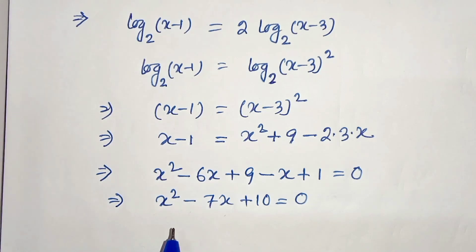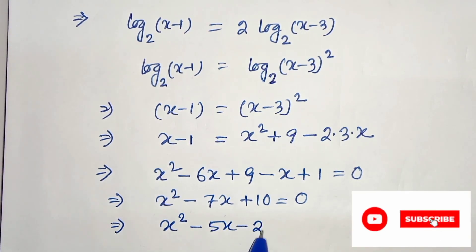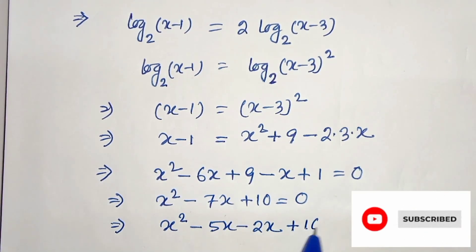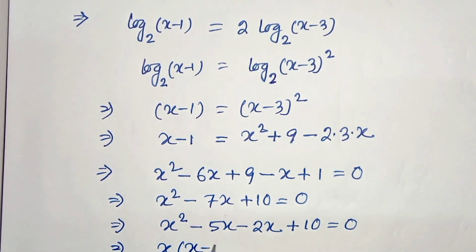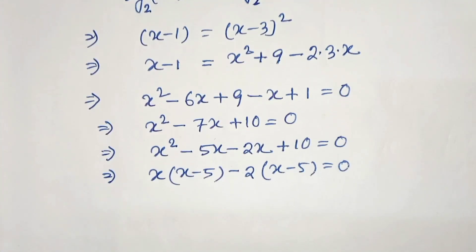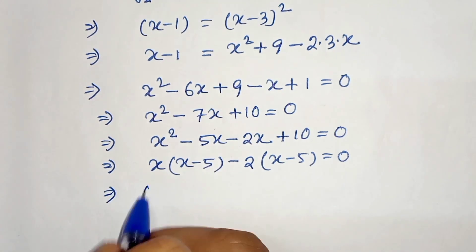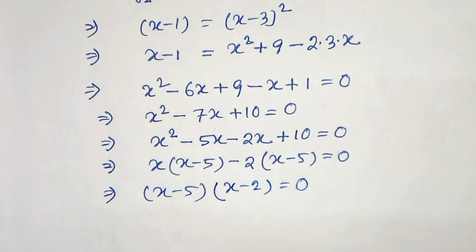Now we have to factorize this. The sum is minus 7 and the product is 10, so we take x squared minus 5x minus 2x plus 10 equals 0. Taking x common from the first two terms gives x(x minus 5), and minus 2 common from the last two gives minus 2(x minus 5) equals 0. Therefore, taking (x minus 5) common, we get (x minus 5)(x minus 2) equals 0.